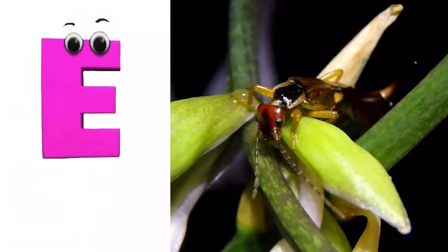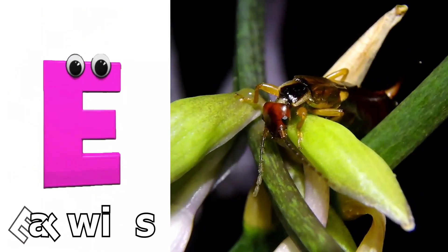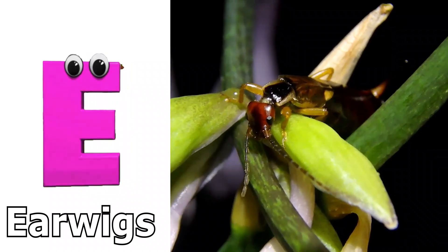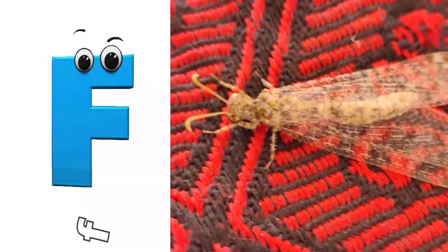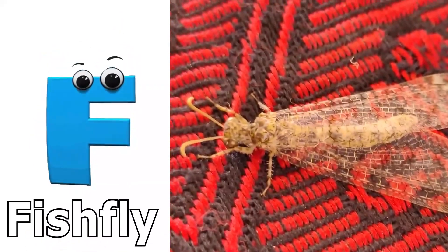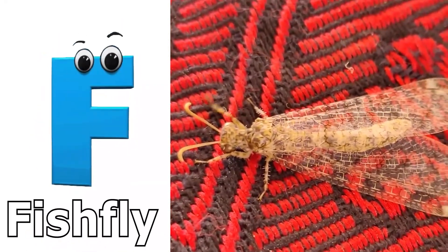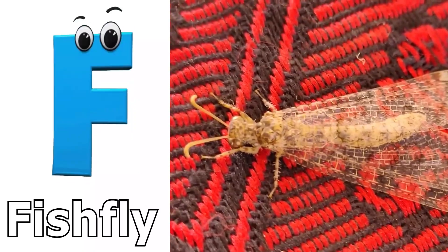E is for earwigs, earwigs. F is for fish fly, fish fly.